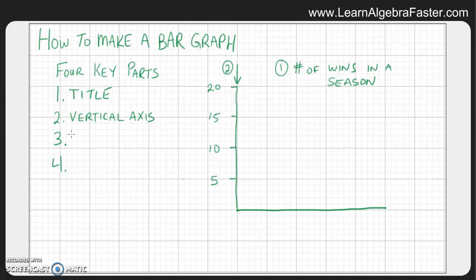Now key part number three, once you've done the vertical axis, there's another axis on here that we need to label, and that would be the horizontal axis. That is this axis here that's going from left to right. So that's key part number three. In this case, we will talk about the number of wins in a season, so we will label the teams: team A, B, C, and D.